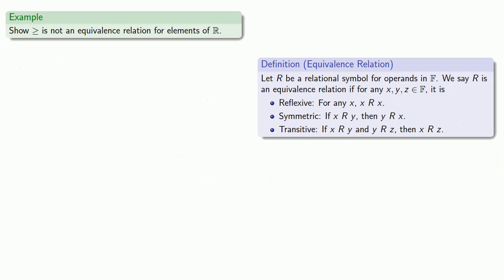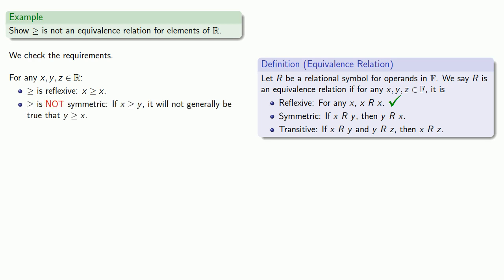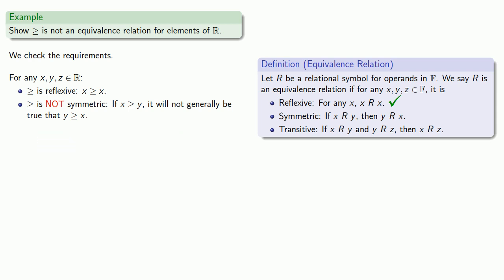How about greater than or equal to? Again, we'll check our requirements for any x, y, and z in R. Well, greater than or equal to does satisfy reflexivity — x is greater than or equal to x. But it fails symmetry; it is not symmetric. If x is greater than or equal to y, it will not generally be true that y is greater than or equal to x. As soon as we fail any of the entrance requirements to the club, we don't get in. So since greater than or equal to is not symmetric, we know it is not an equivalence relation.